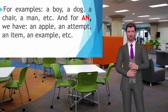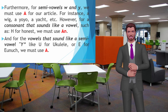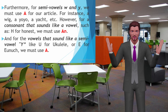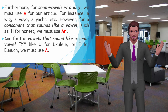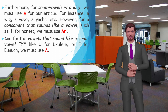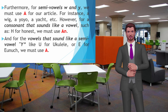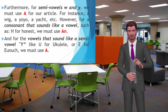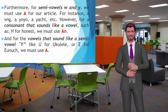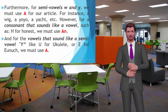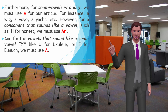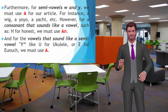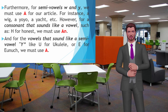Furthermore, for semi-vowels W and Y, we must use 'a' for our article. For instance: a wig, a yo-yo, a yacht, etc. However, for consonants that sound like a vowel, such as H in 'honest', we must use 'an'. And for vowels that sound like the semi-vowel Y, like U in 'ukulele' or E in 'eunuch', we must use 'a'.